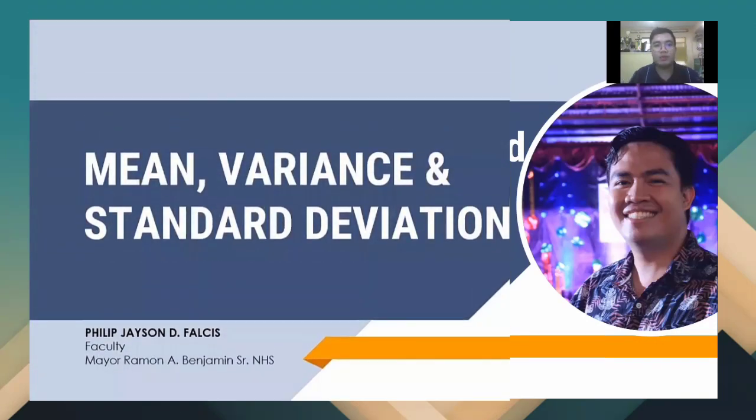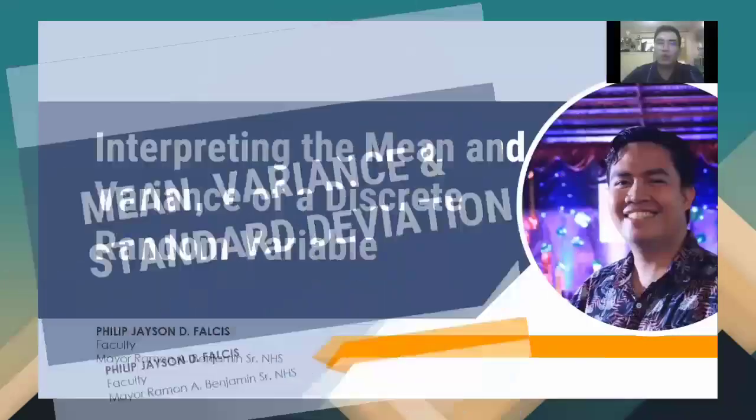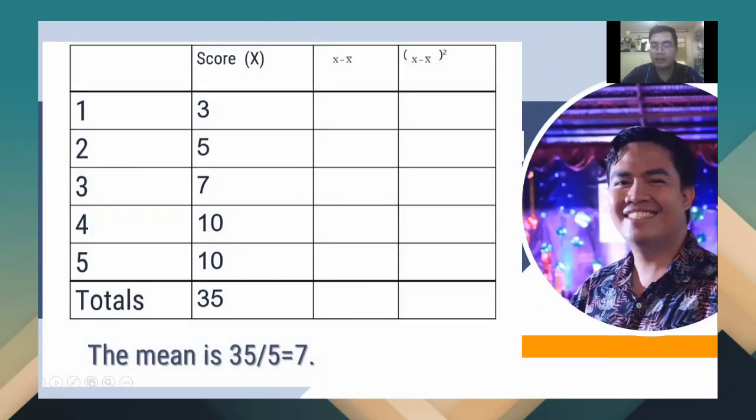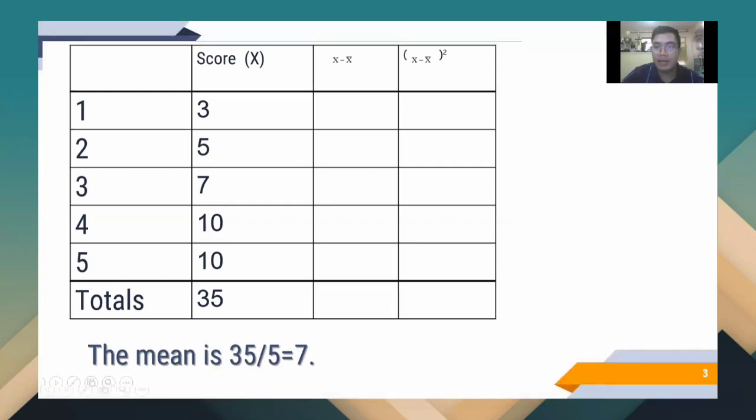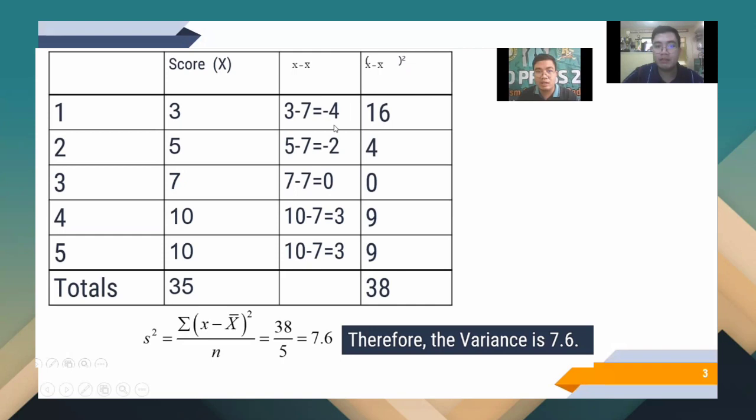Previously in our class, we were able to discuss about getting the mean, the variance, and the standard deviation, but how do we find or how do we get the mean and the variance of a discrete random variable, and that involves a probability of course.